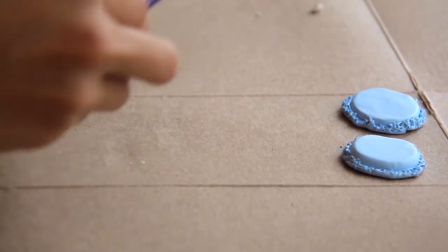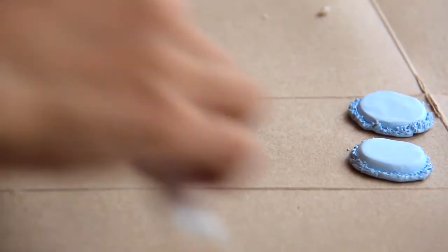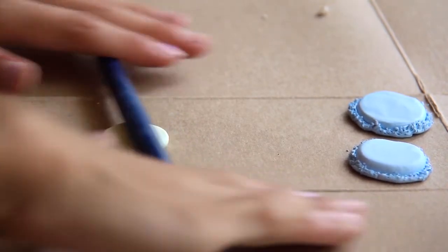Then you're going to flatten it. Once again I'm using my clay shaping tool but you can use any flat surface. And then you're going to make sure that it's nice and smooth. I'm just using the handle of a paintbrush to do so.